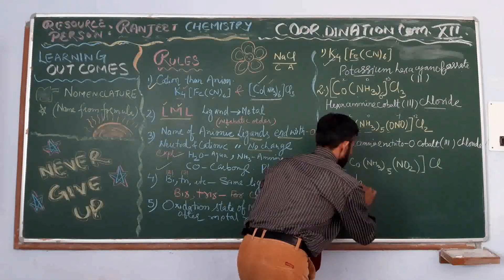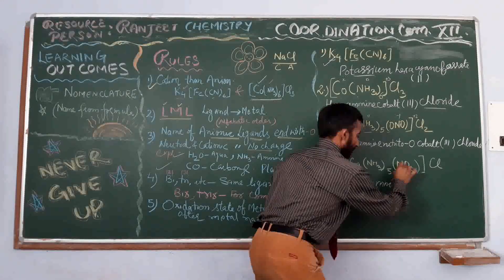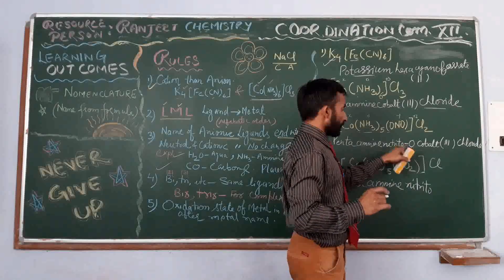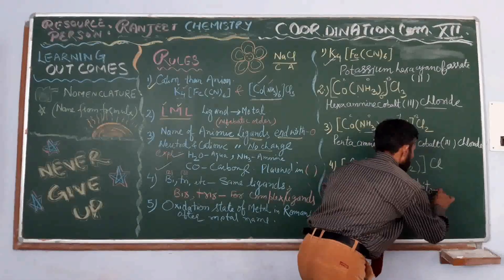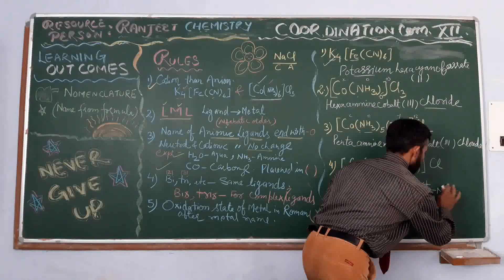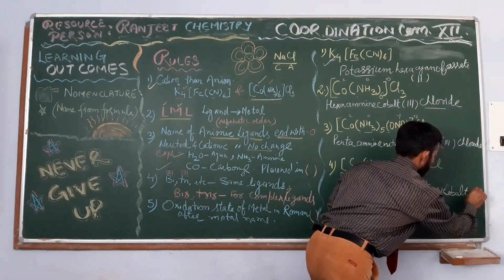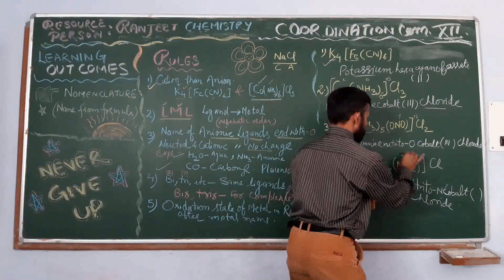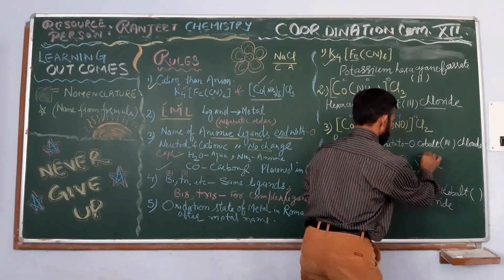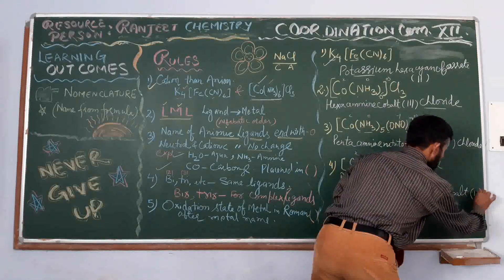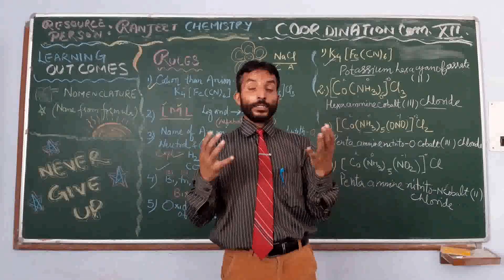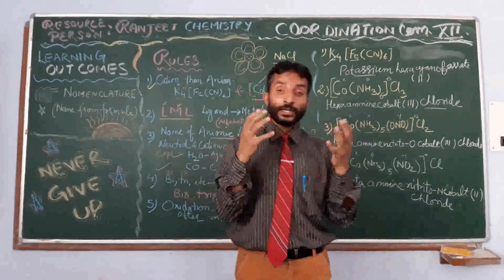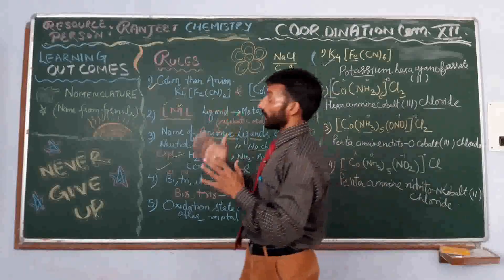Now in this next example, the donor atom is N, not O. Here it was O, so we wrote nitrito-O. Here it is N, so we write nitrito-N. Then cobalt. The oxidation number is calculated: 0 plus (−1) gives x = +2. So cobalt(II). You will solve more examples so that the concepts go into our understanding of coordination compounds and how to write their names — this is how to write the nomenclature.